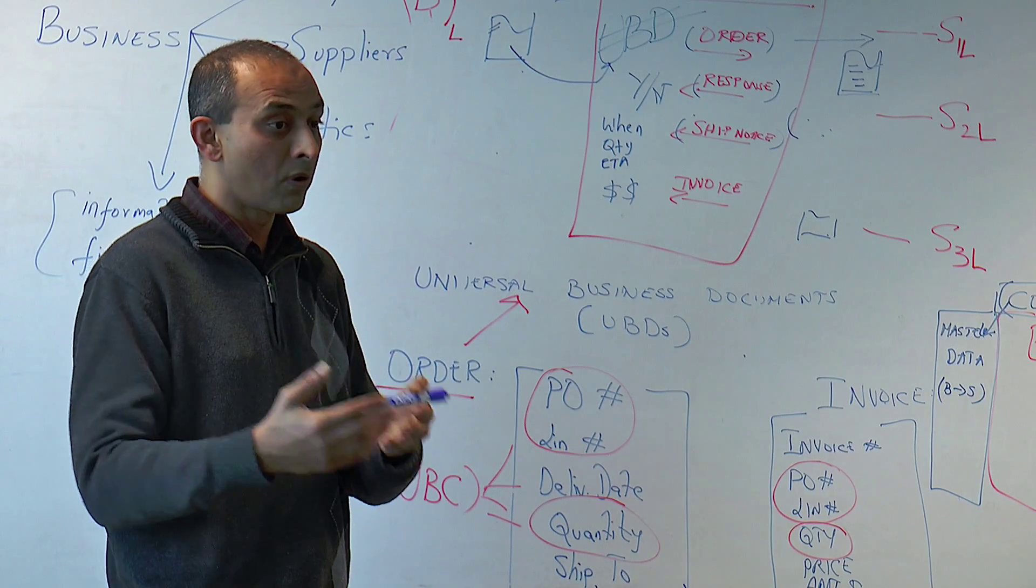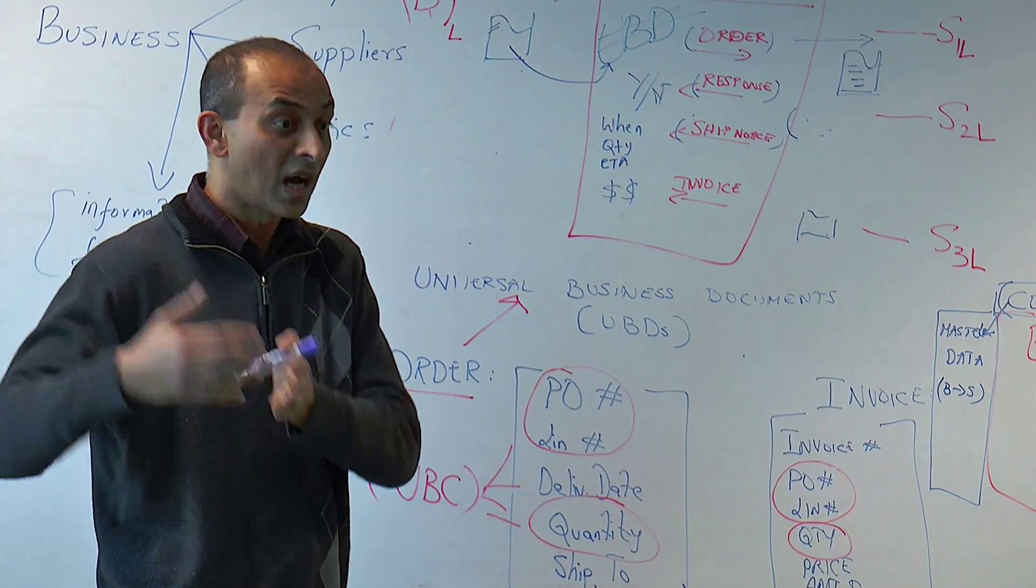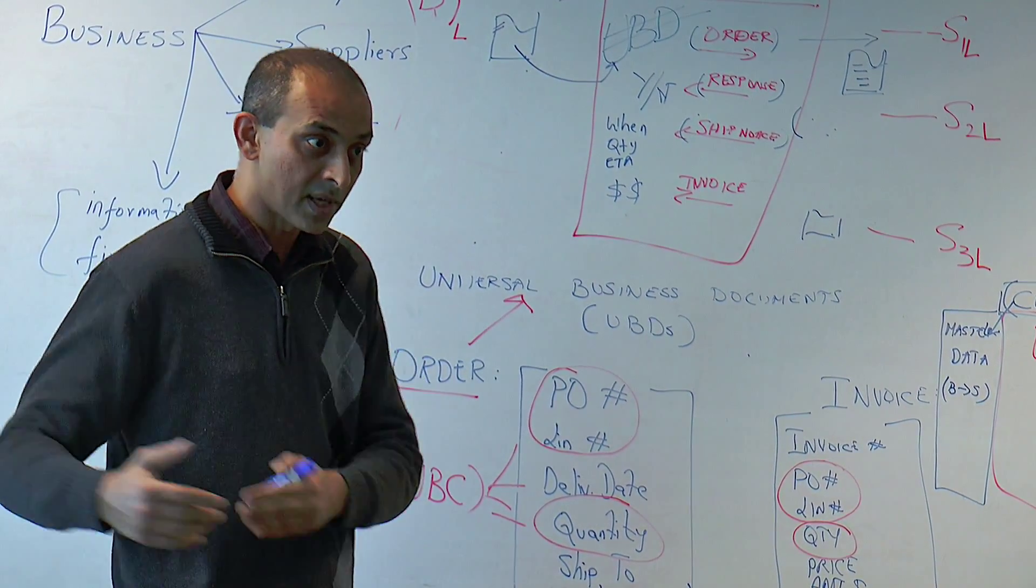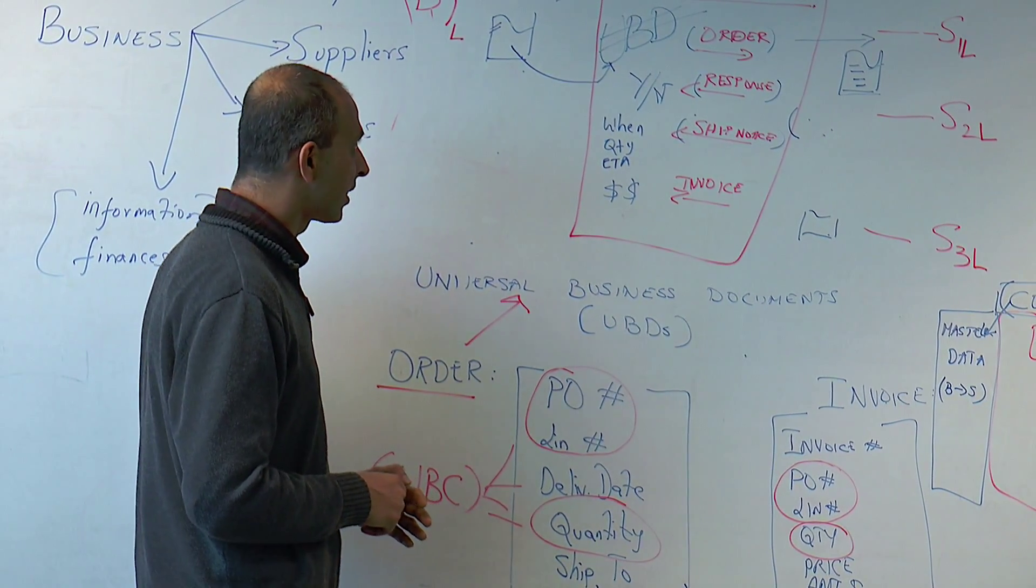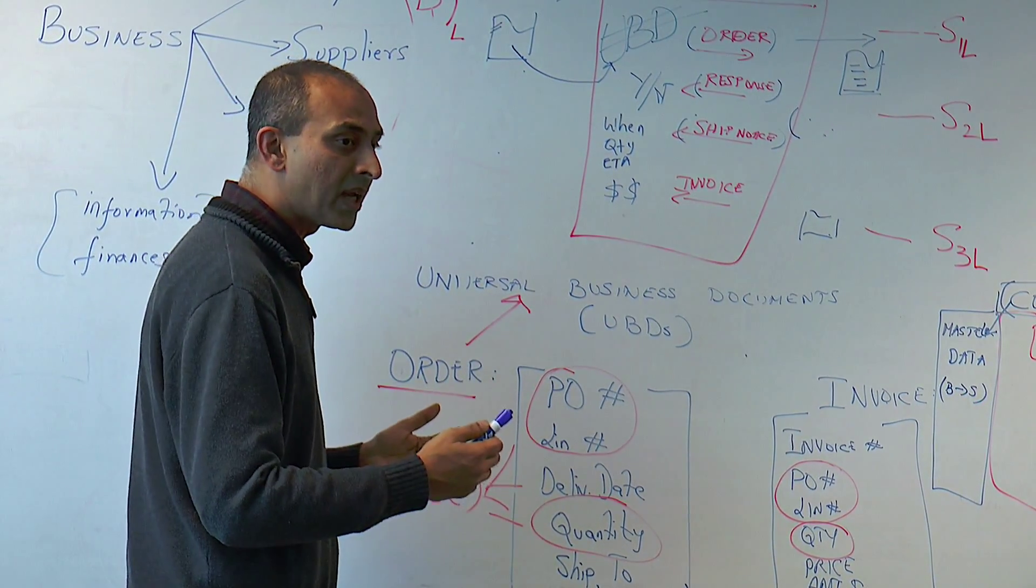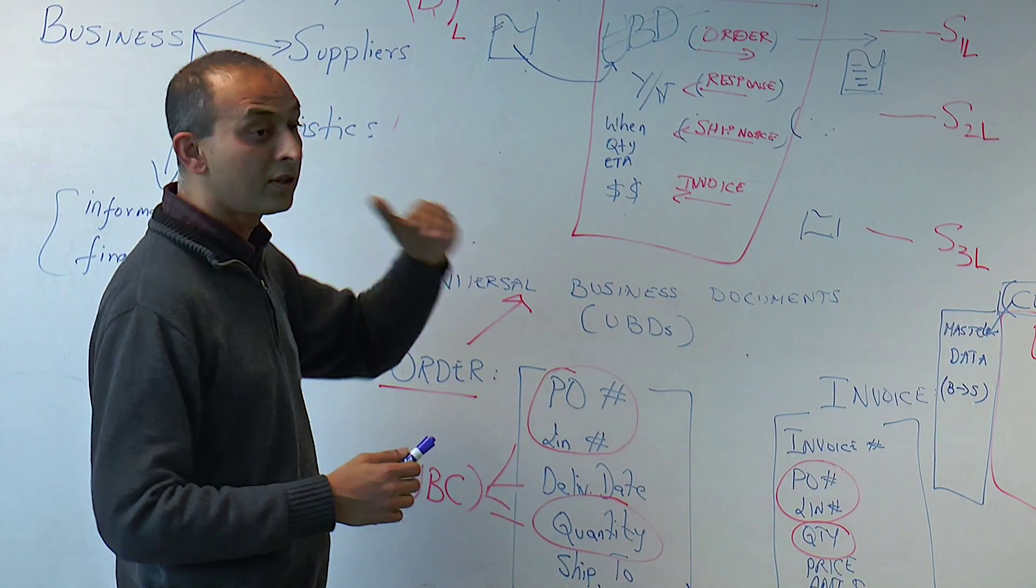Some of the companies that belong to the process industries serve other industries, so automobiles for example, consumer packaged goods as another example. We're already in that space. Can we get into their supply chain in the same way?